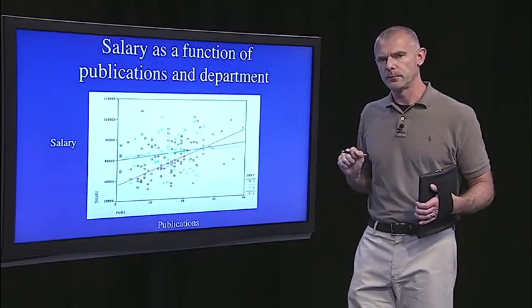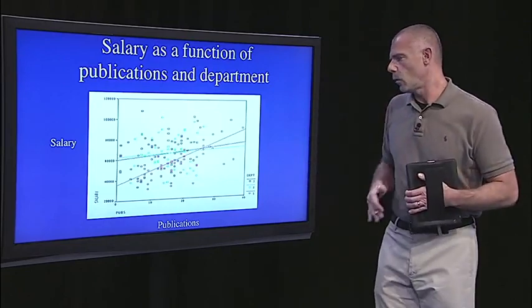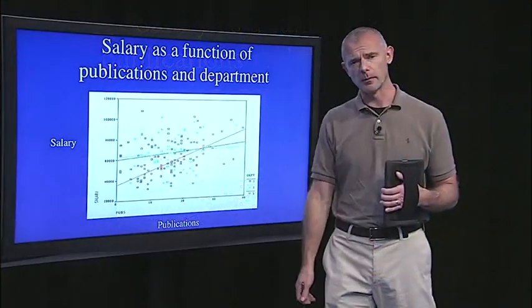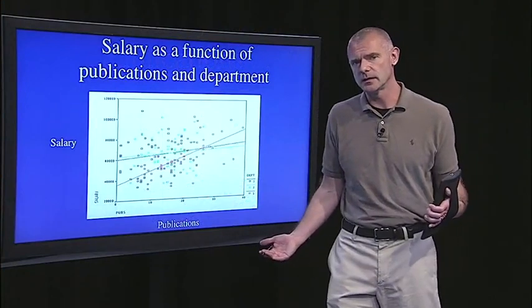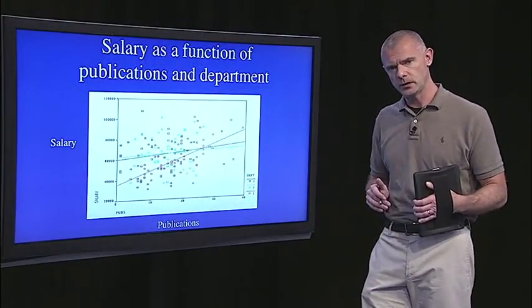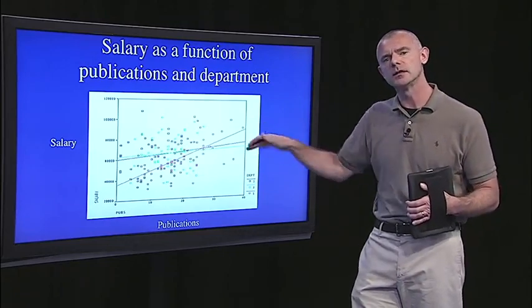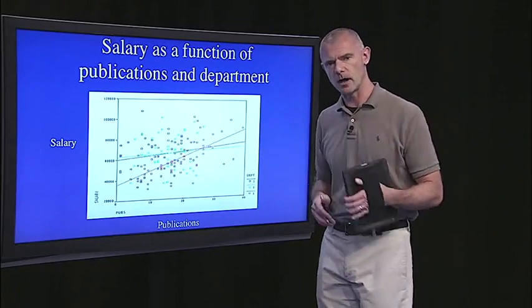I'm going to start with this graph to basically give away the punchline. What I'm plotting is the relationship between publications and salary. I'm showing three different regression lines, each representing a different department. The steepest line — the red line — is the psychology department, which clearly has the strongest relationship between publications and salary. The other two departments have much shallower slopes — it might not even be a significant relationship. So it looks as if department does moderate this relationship, but we need the statistical test to see if the difference in slopes is significant. That's what the moderation analysis will do.